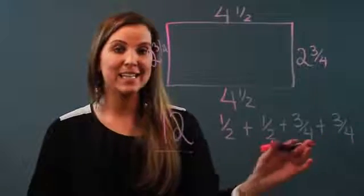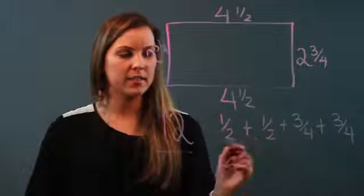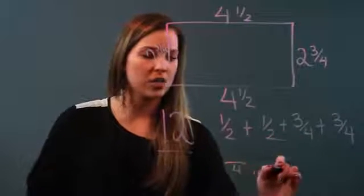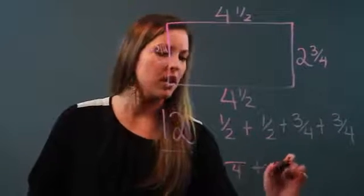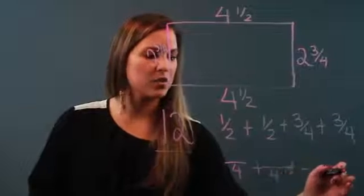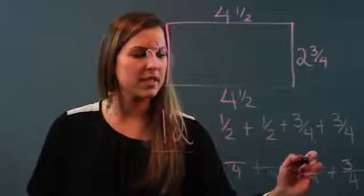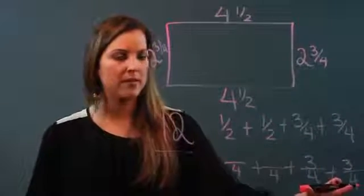So I'm looking for the least common denominator and the least common denominator would be four. So I want to change all of these fractions so that their denominators are four. That means that my last two fractions can actually stay the same because they already have a denominator of four.